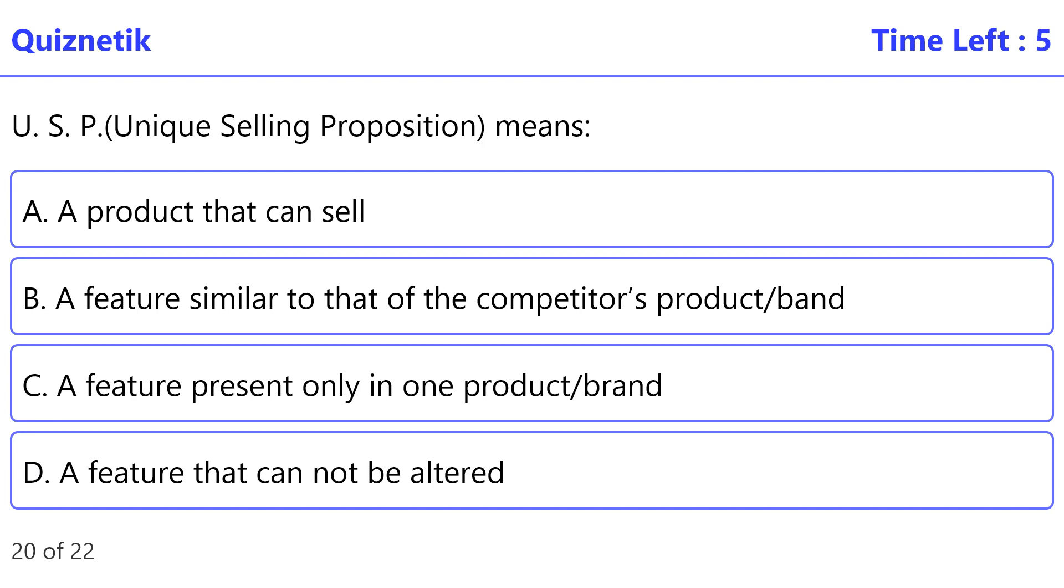USP (Unique Selling Proposition) means correct option C, a feature present only in one product or brand.